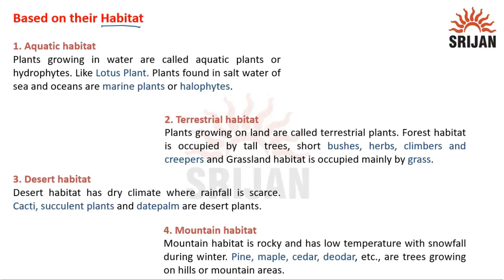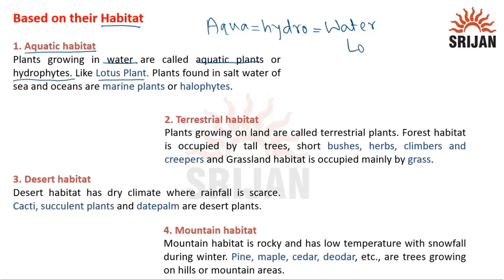Now, grouping based on habitat. In aquatic habitat, plants growing in water are called aquatic plants or hydrophytes. Aqua and hydro both come from the word water, so these terms are synonymous. Lotus grows in fresh water, and plants found in the salt water of seas or oceans are called marine plants or halophytes.